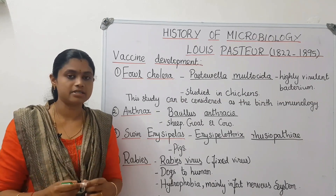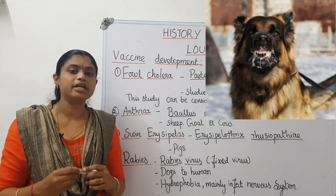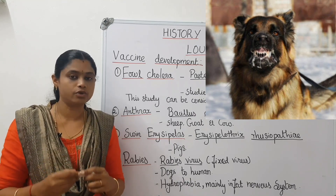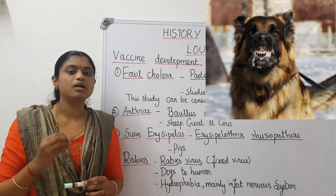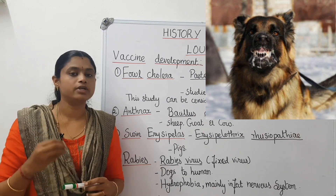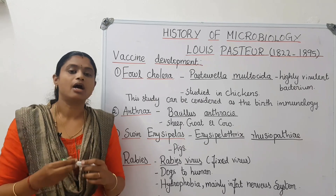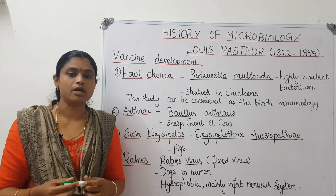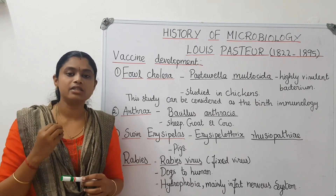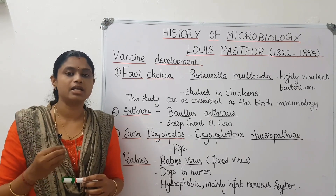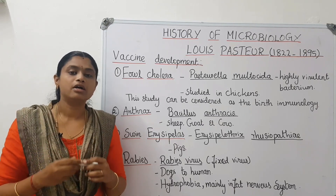The last one is Rabies. It is caused by a fixed virus and is transmitted through dogs. People affected by this virus show many symptoms.